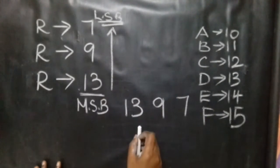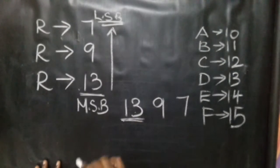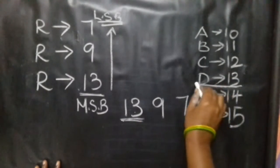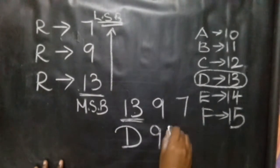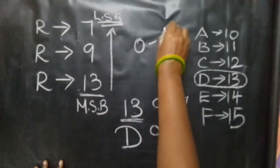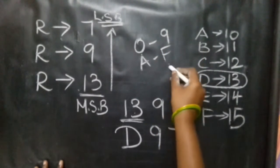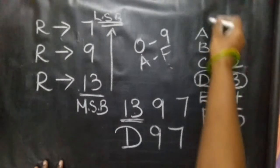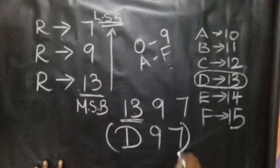This gives the answer. The quotient is 13, which in hexadecimal is the equivalent hexadecimal value. 13 is D - that's the correspondence. So D, then 9. Hexadecimal uses 0 to 9, then A to F. A is 10, B is 11, C is 12, D is 13, E is 14, F is 15.